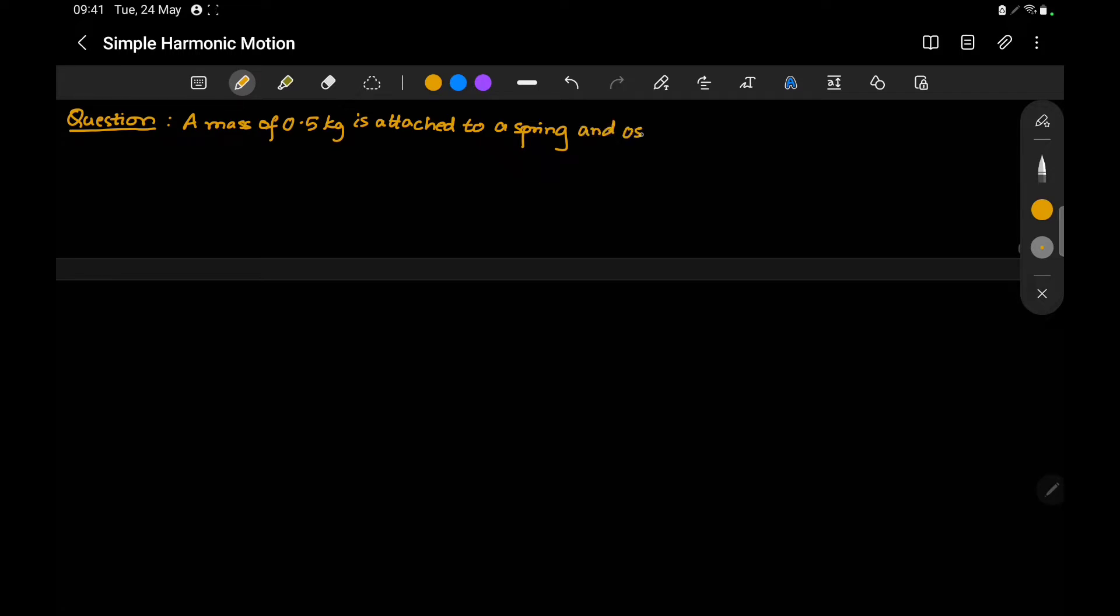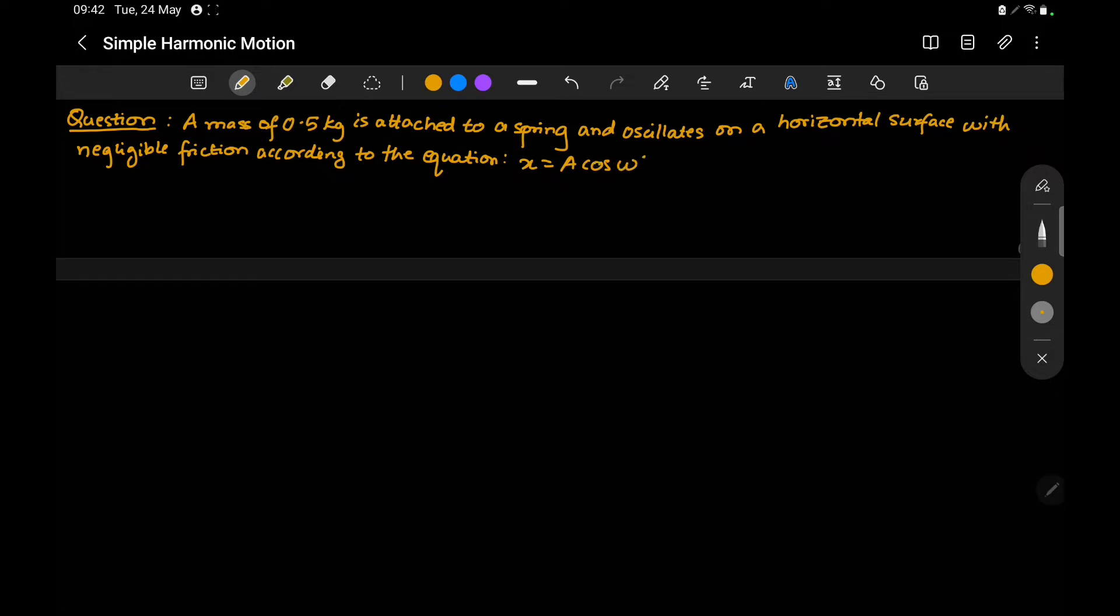The mass oscillates on a horizontal surface with negligible friction according to the equation x = A cos(ωt). This is the equation for the displacement.